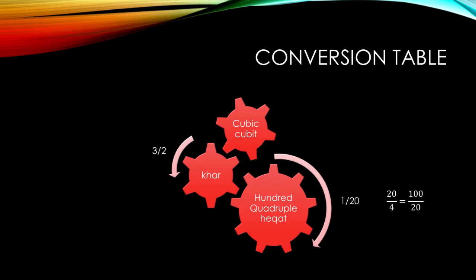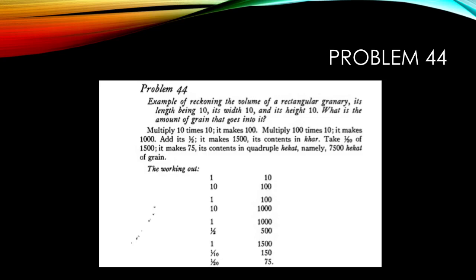So as a reminder, going from cubits to Khar, you multiply by three halves or one and a half. Then to go from Khar to a hundred quadruple Hekat, you divide by 20, which gives us the result. Seventy-five hundred quadruple Hekat.